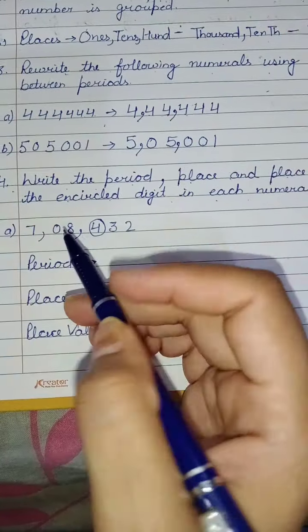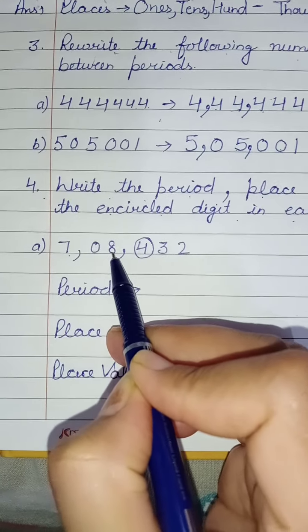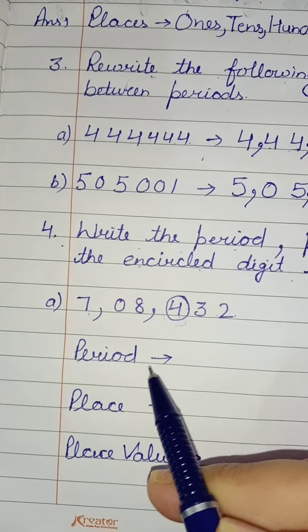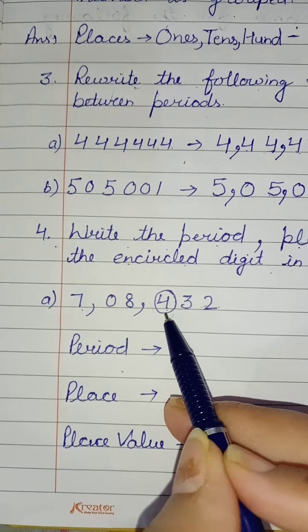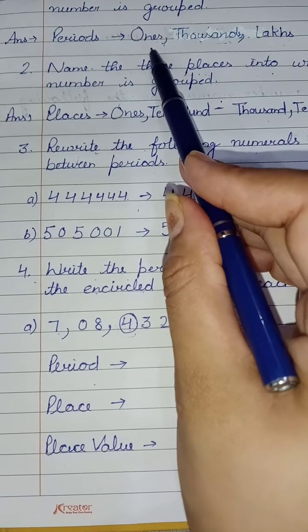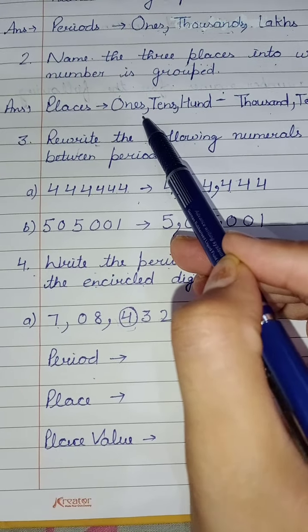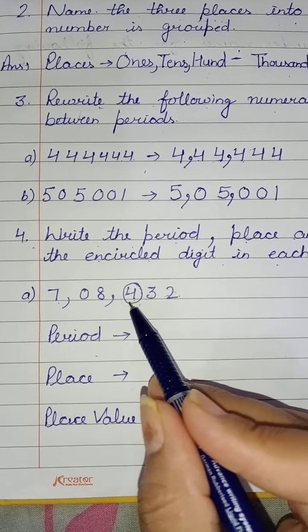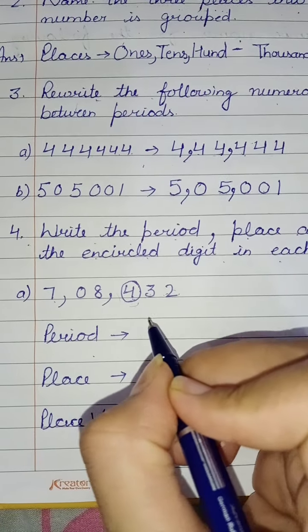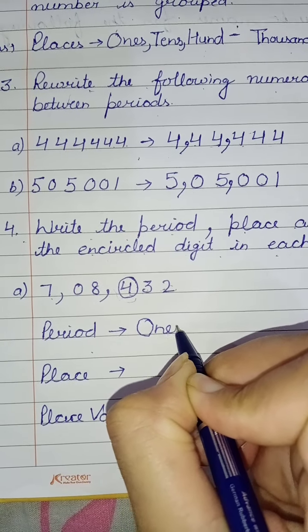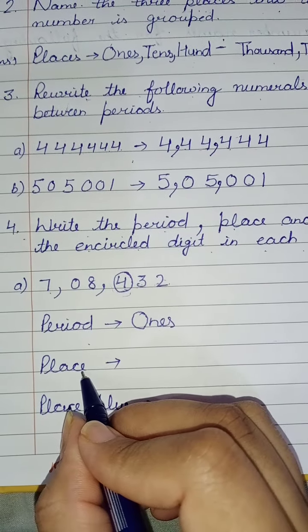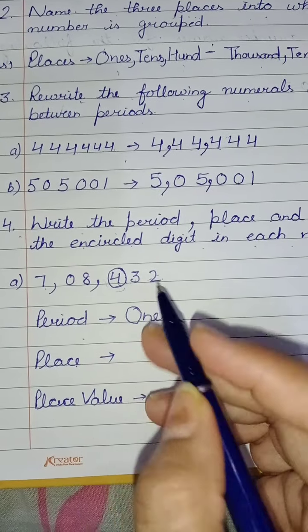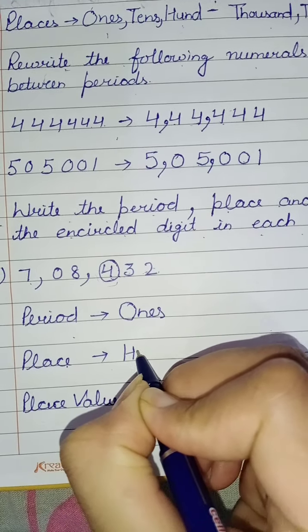This is my number: seven lakh eight thousand four hundred thirty-two. This is my number. The encircled digit is in the hundreds place. It means that this digit stands in the hundreds place.